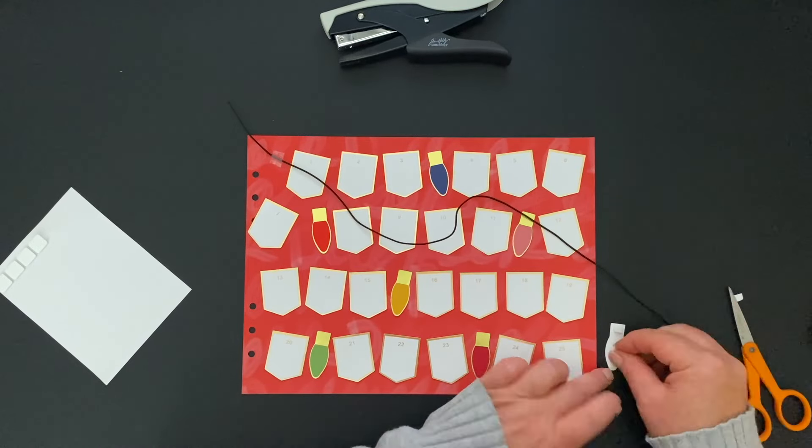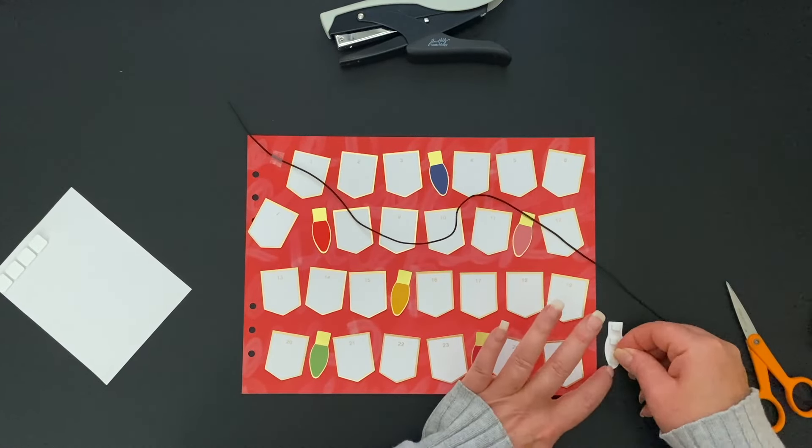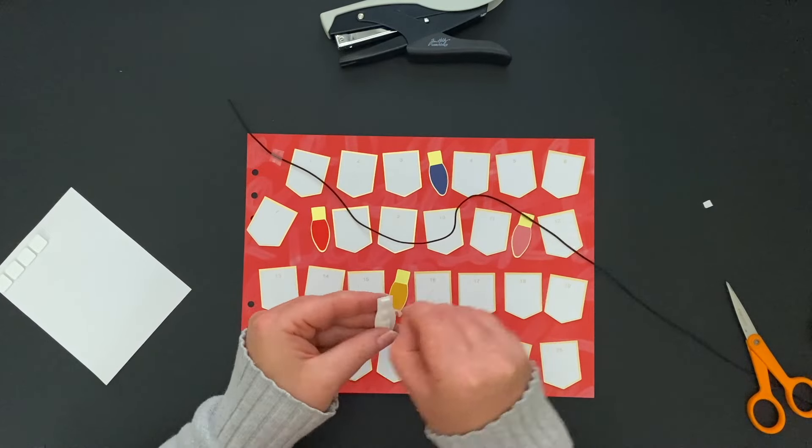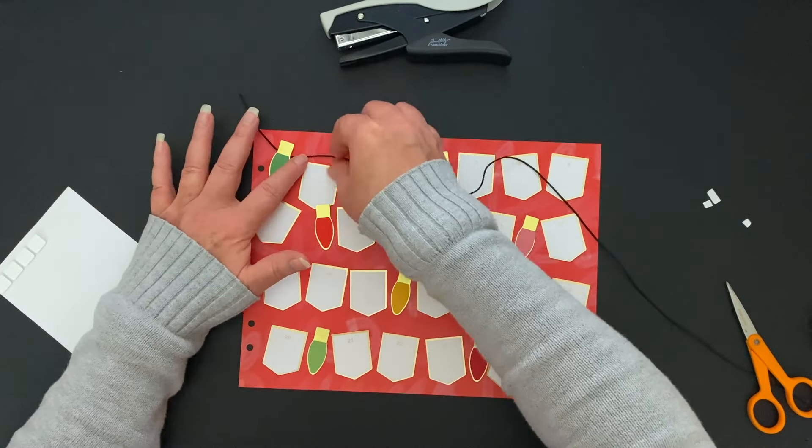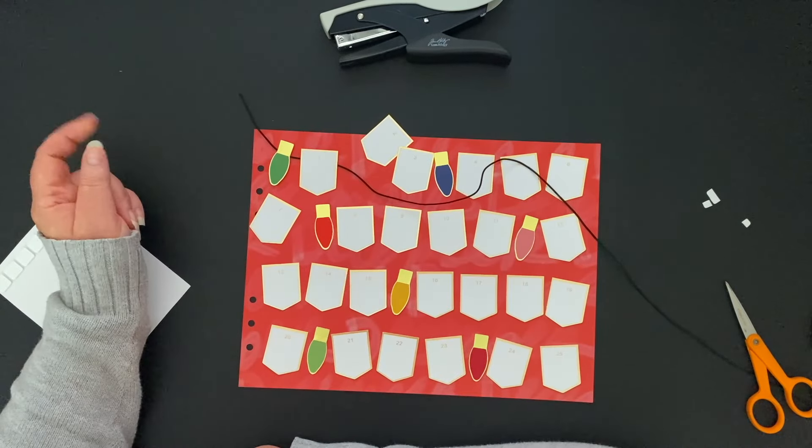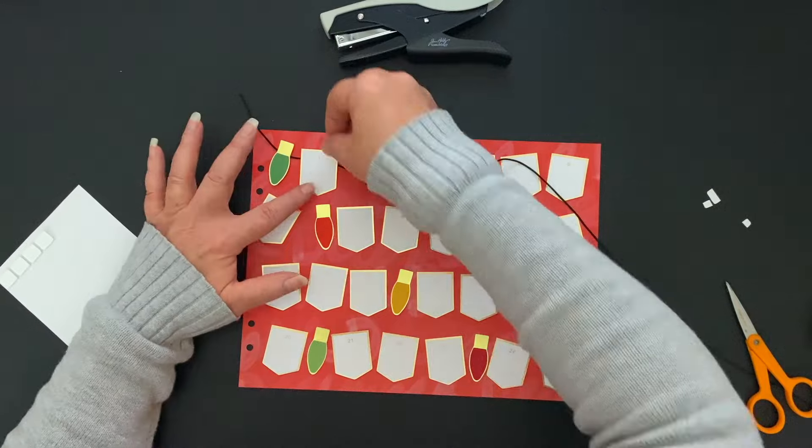On the back of each of these little bulbs, I'm going to take a foam square and cut it in three. First I cut it in half, and then one of the halves I cut in half, so I have two little pieces to put at the top of the bulb and then a longer half of a piece to put at the bottom.